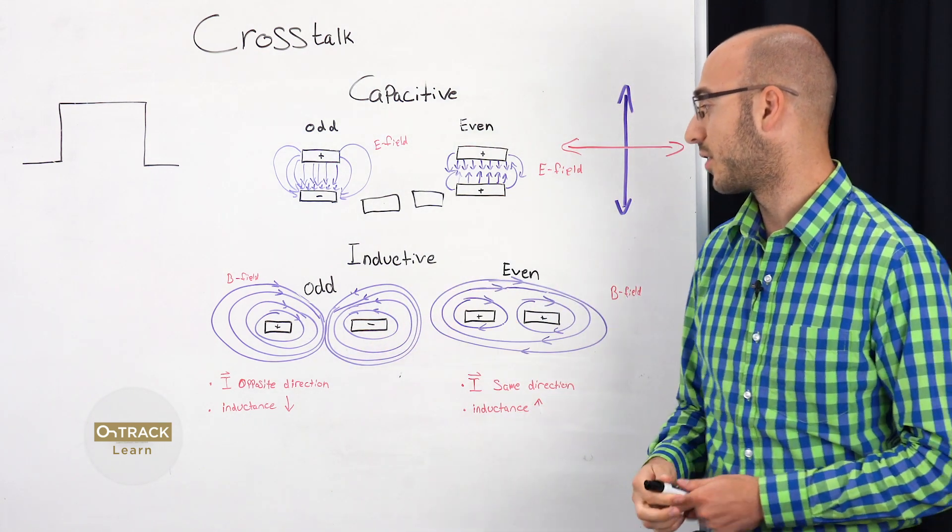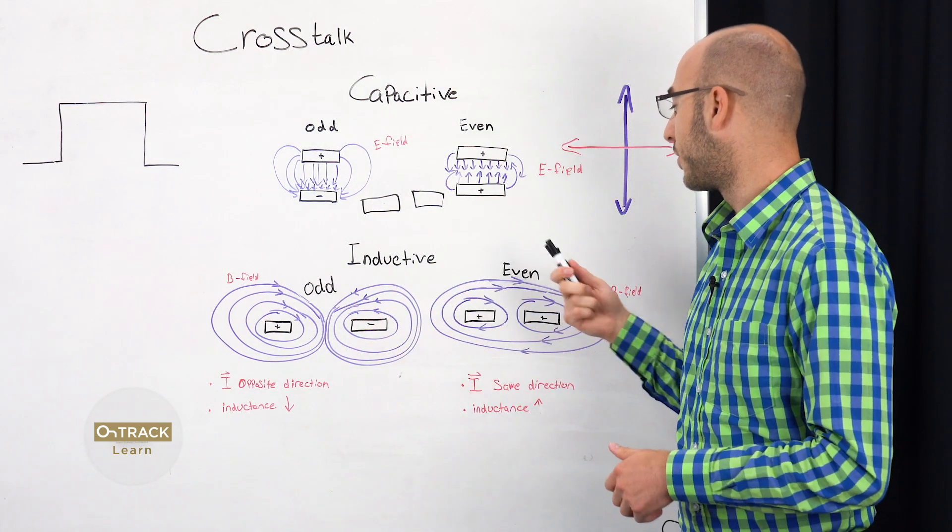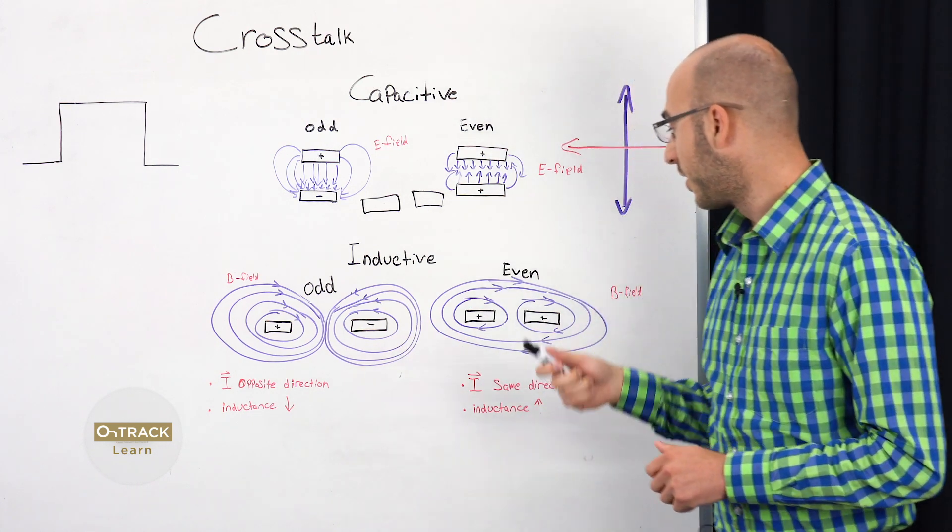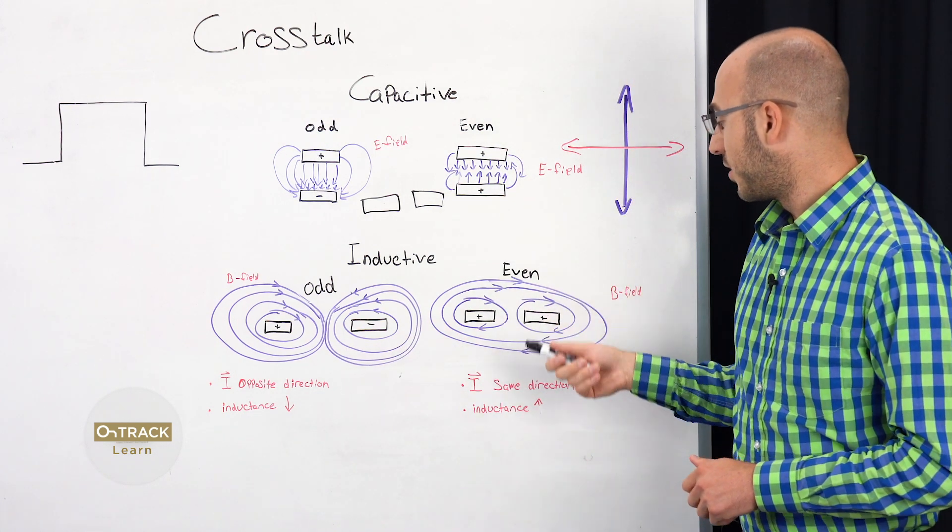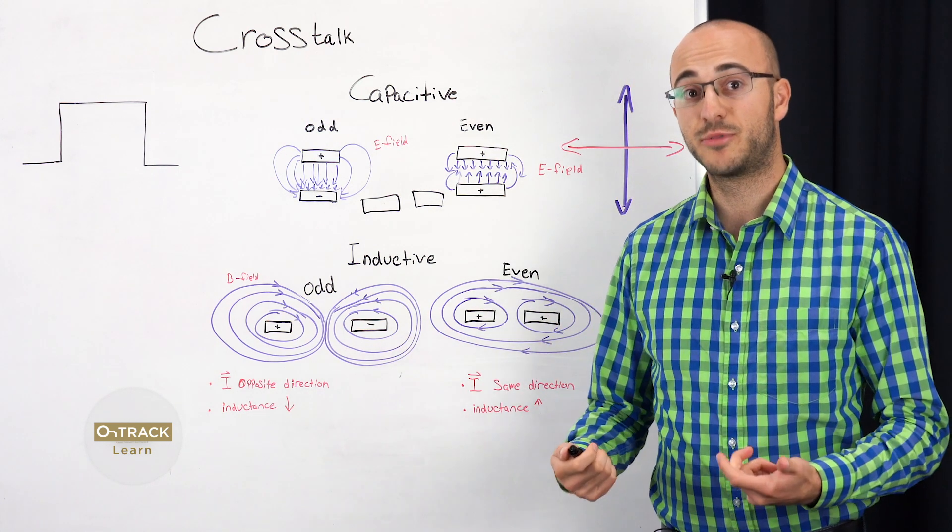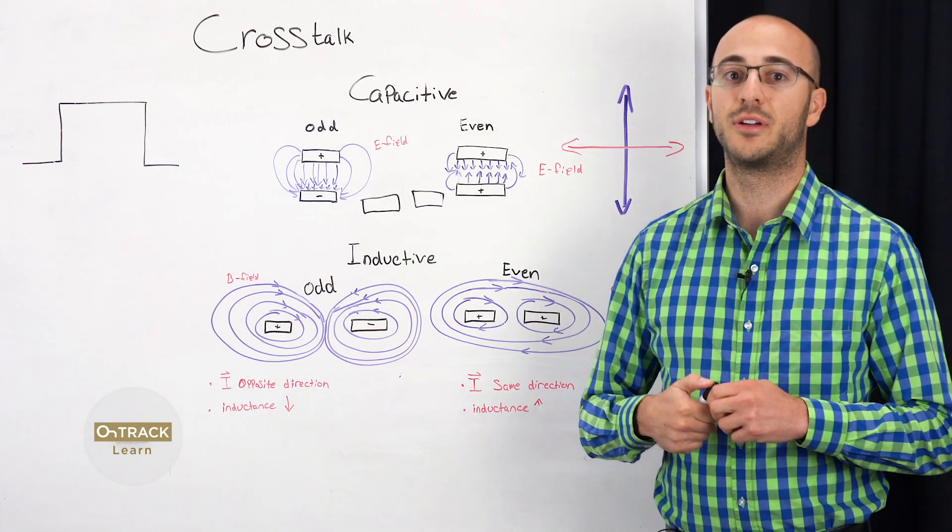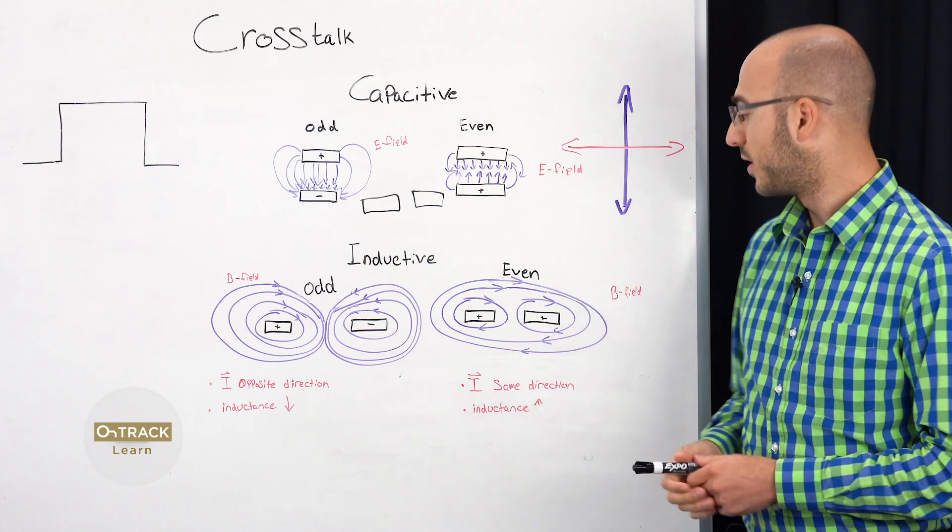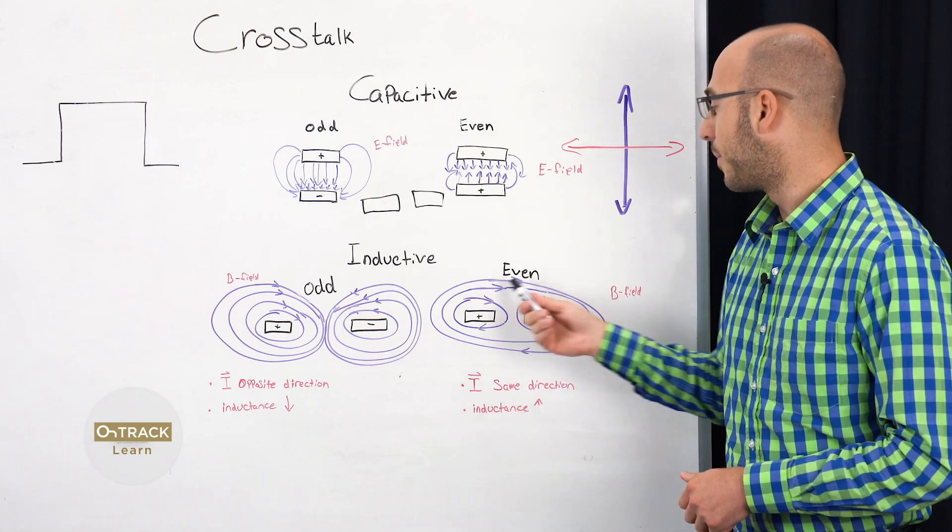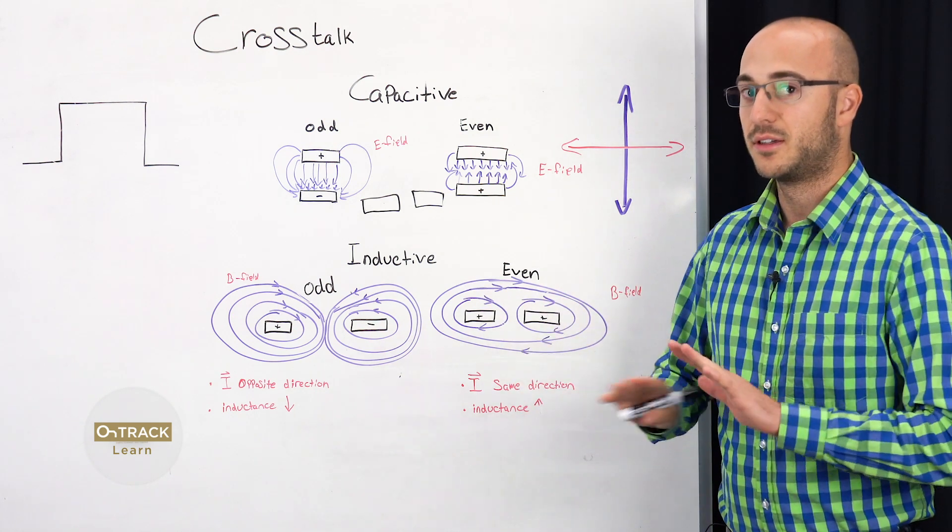So inductive crosstalk. Again, we have odd mode, even mode, in phase, and out of phase. When it's in phase, the current is going in the same direction. And the inductance goes up. Your inductive crosstalk goes up. And you can see they're sharing the same magnetic field here. Not good.